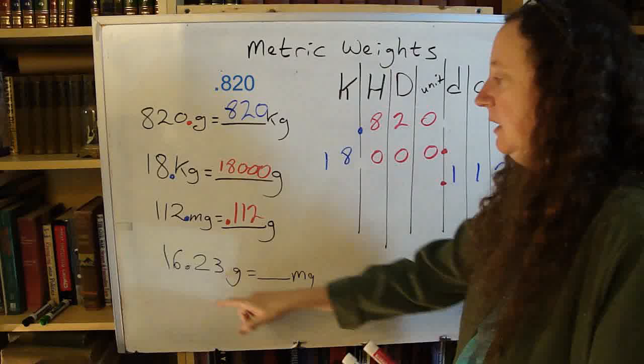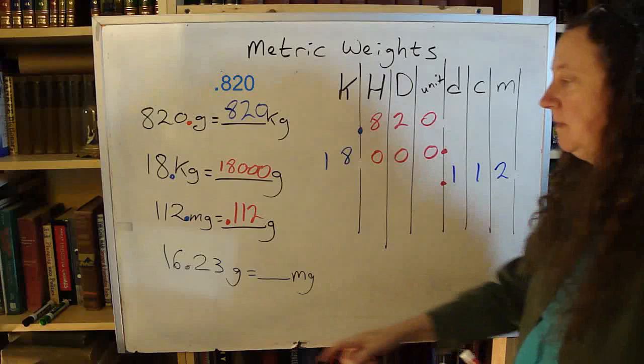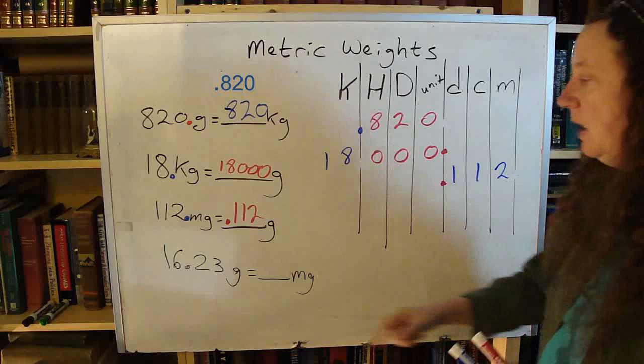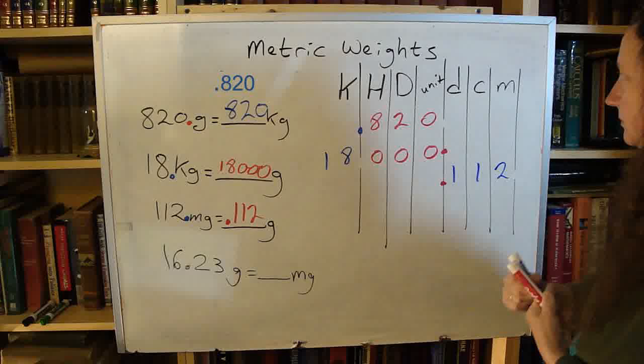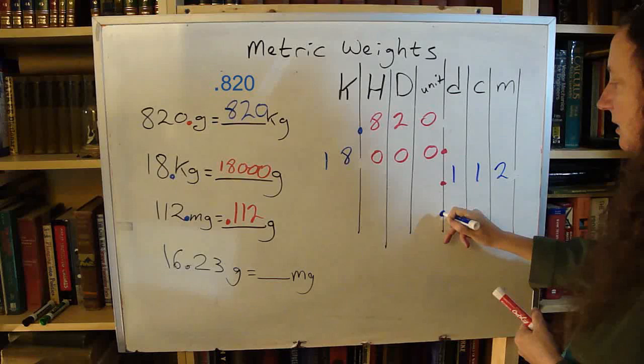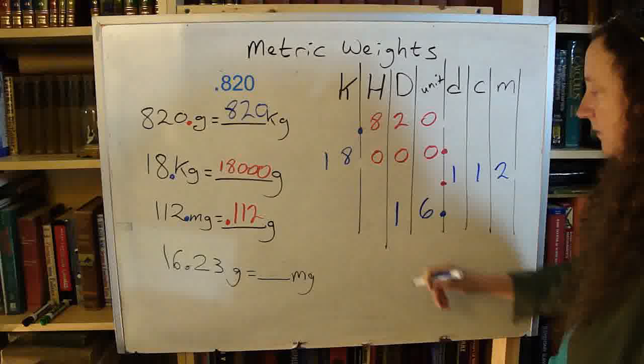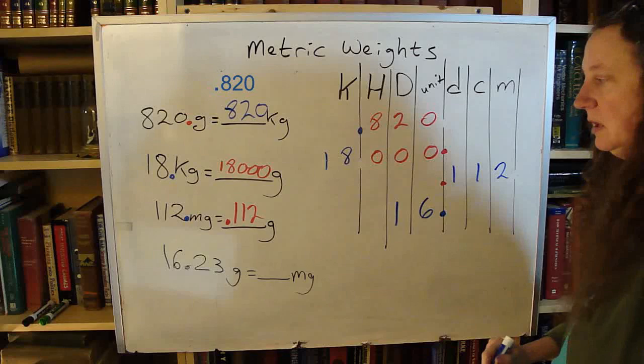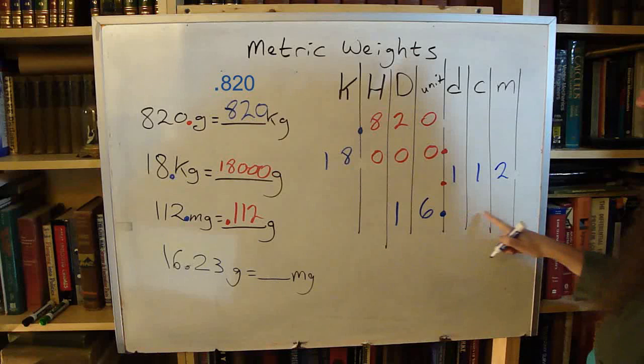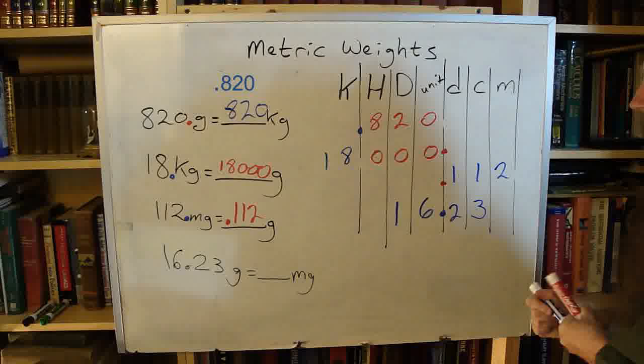Last example for this set: 16.23 grams is how many milligrams. Here I'm actually told where my decimal point is. I want that decimal point to be in my grams column - grams is the main unit, so I put it at the end of the grams column. Fill in the numbers in front of the decimal. In front of this decimal I have the 6 and the 1, so I have 16 point. After the decimal I have 23, so after the decimal I want 23. This number matches what I have here.